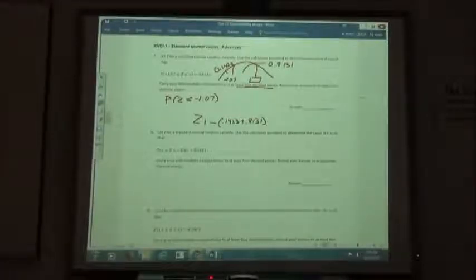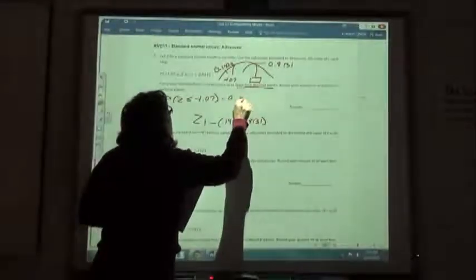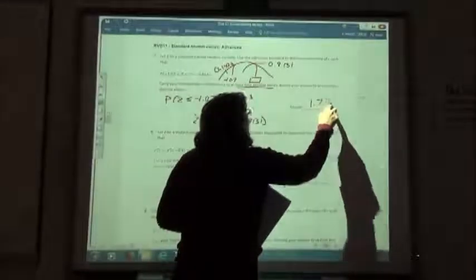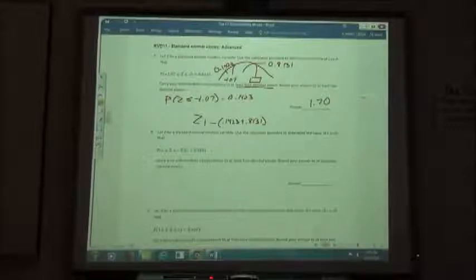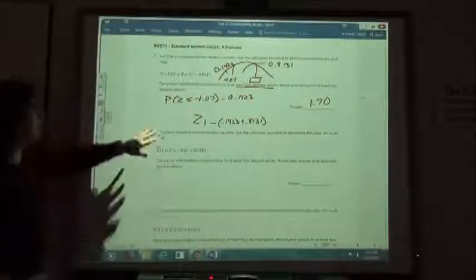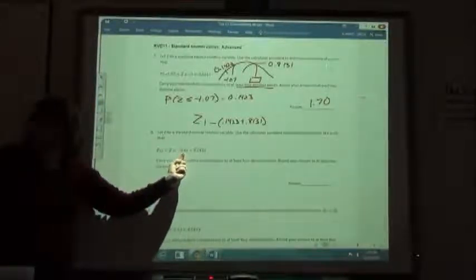I wrote it down the right way now. 1 minus my area. 1.70. And it's what we're going to do. That's what we should end up with. To two decimal places is what it says to round off our answers to. So 1.70. So that's if we have the beginning number and we need to find the end number. The next one, we want to find the beginning number if we have the end number.